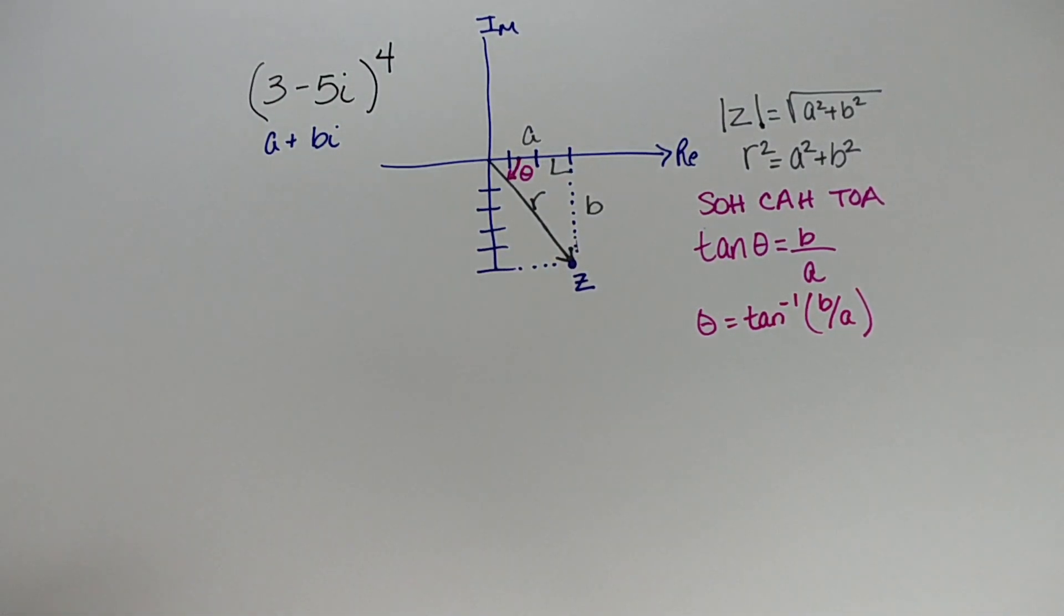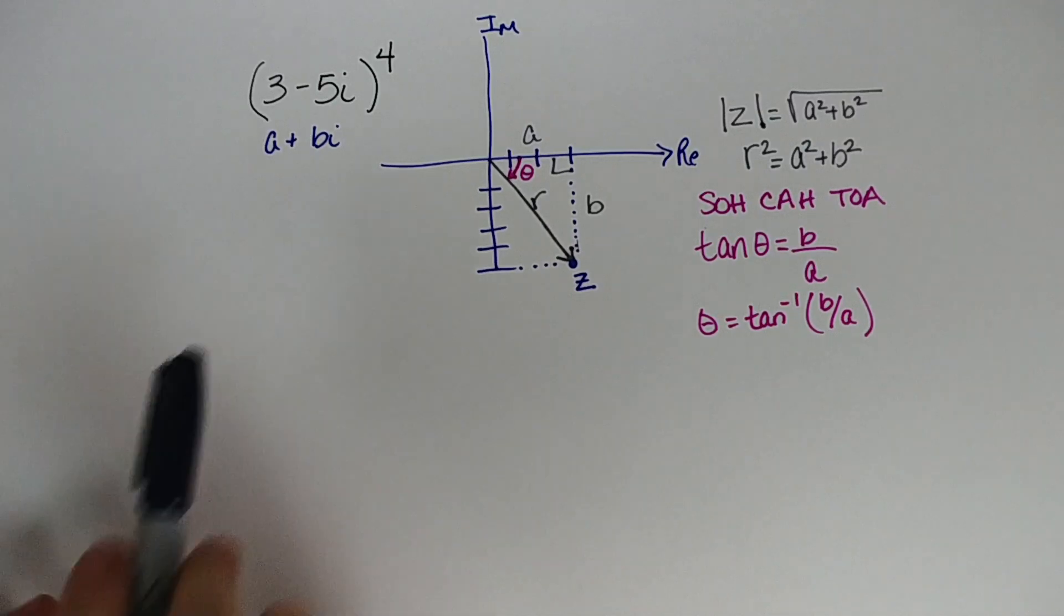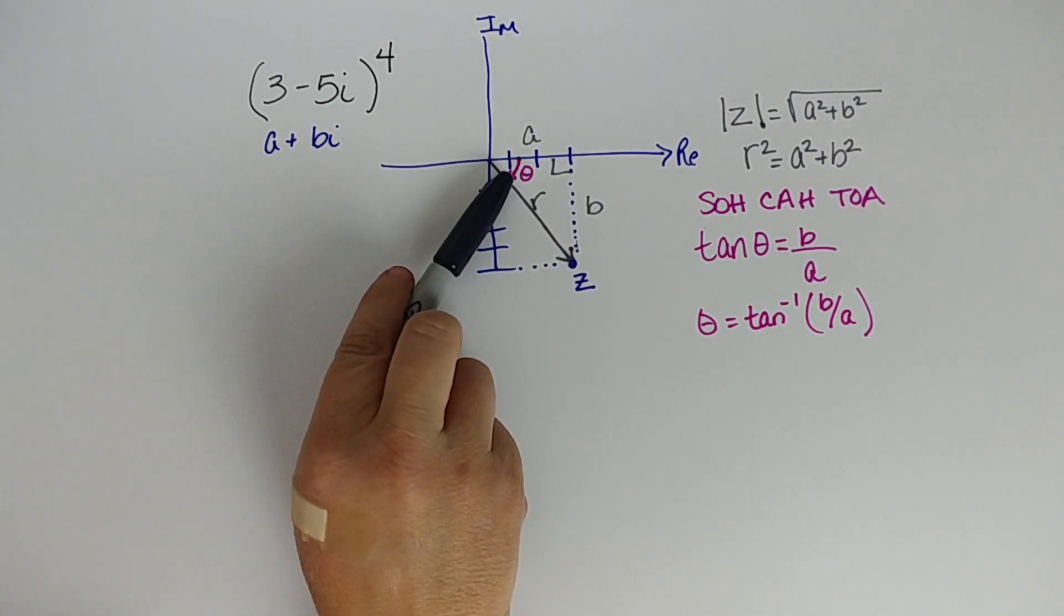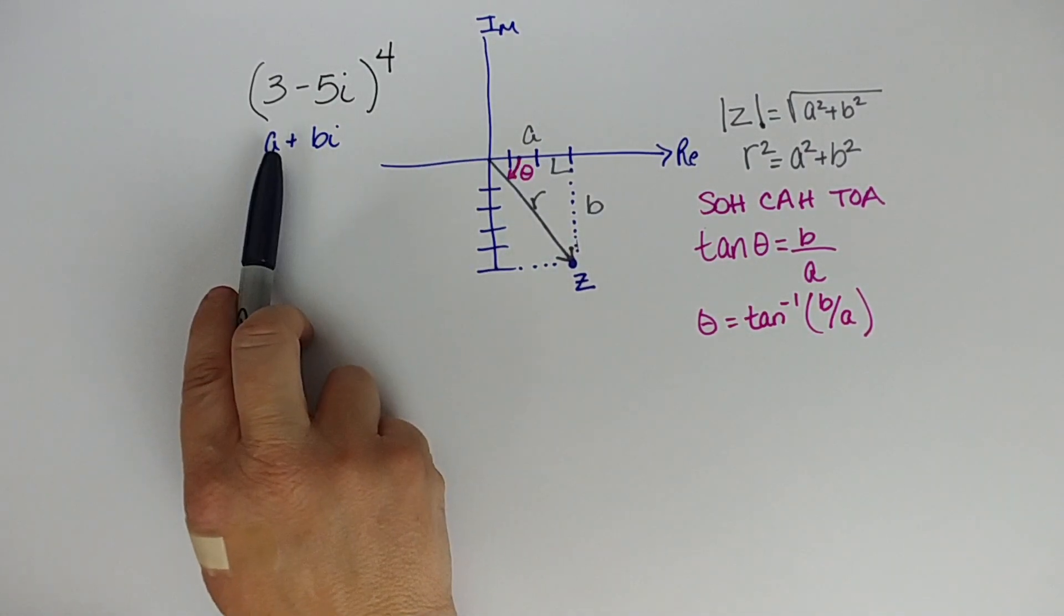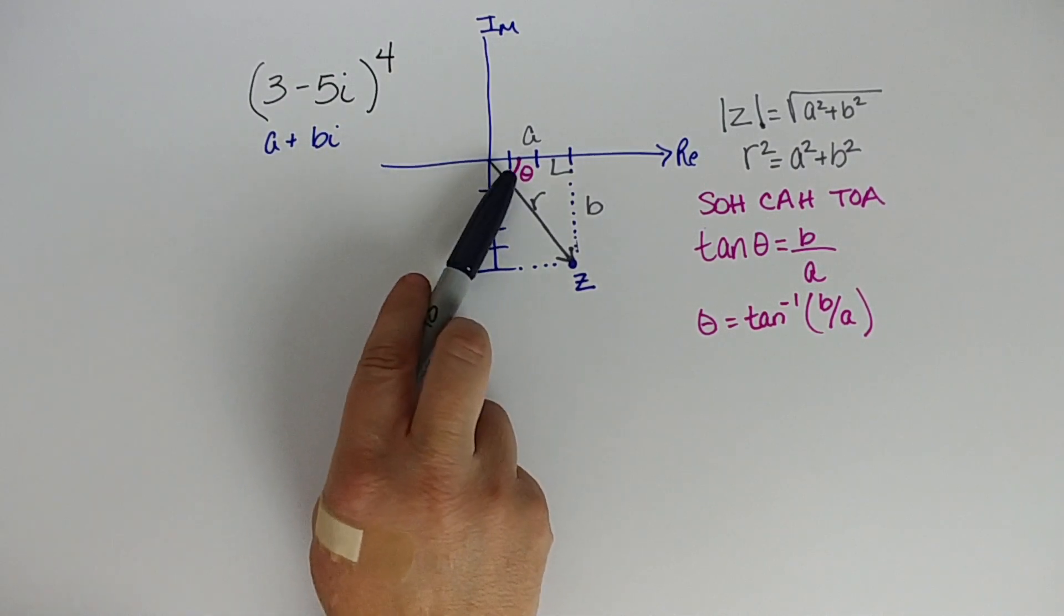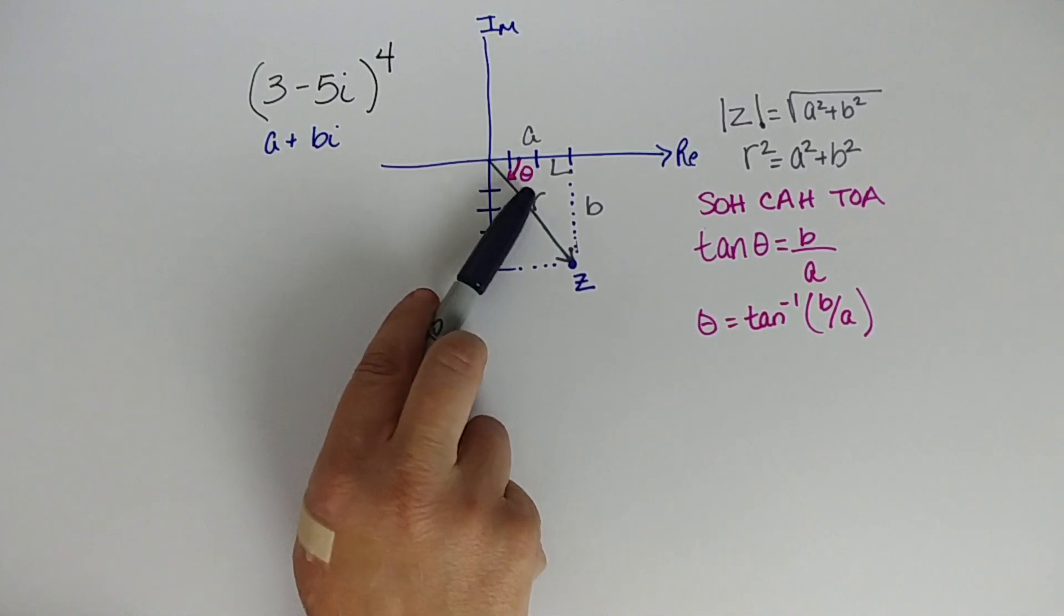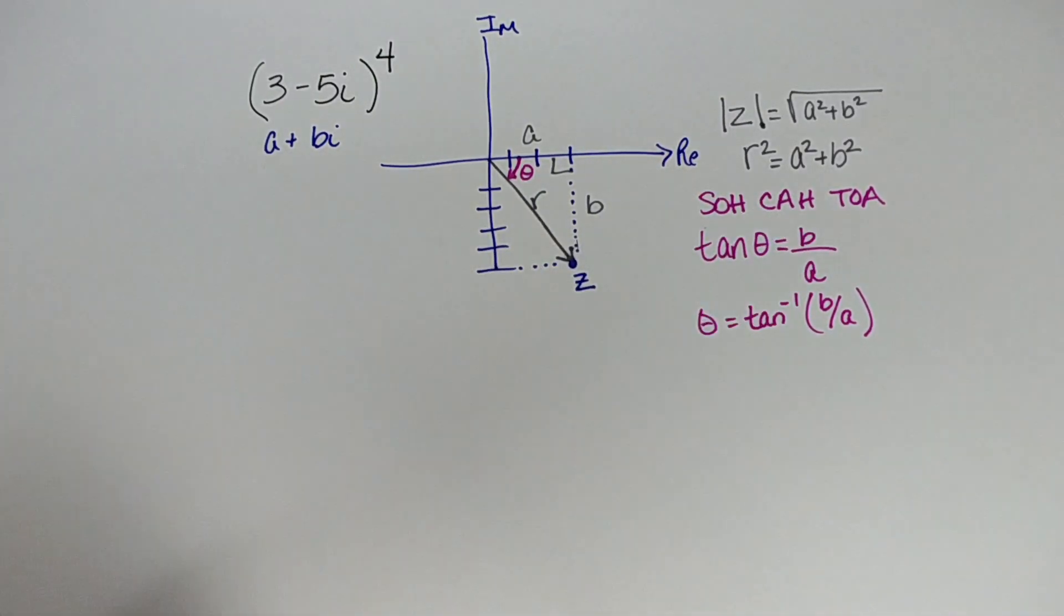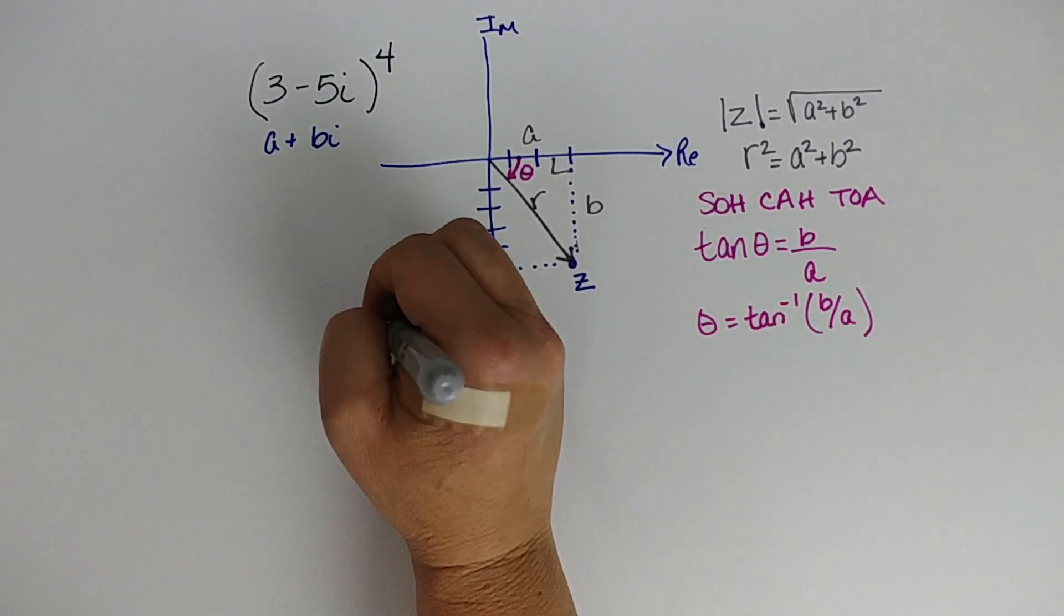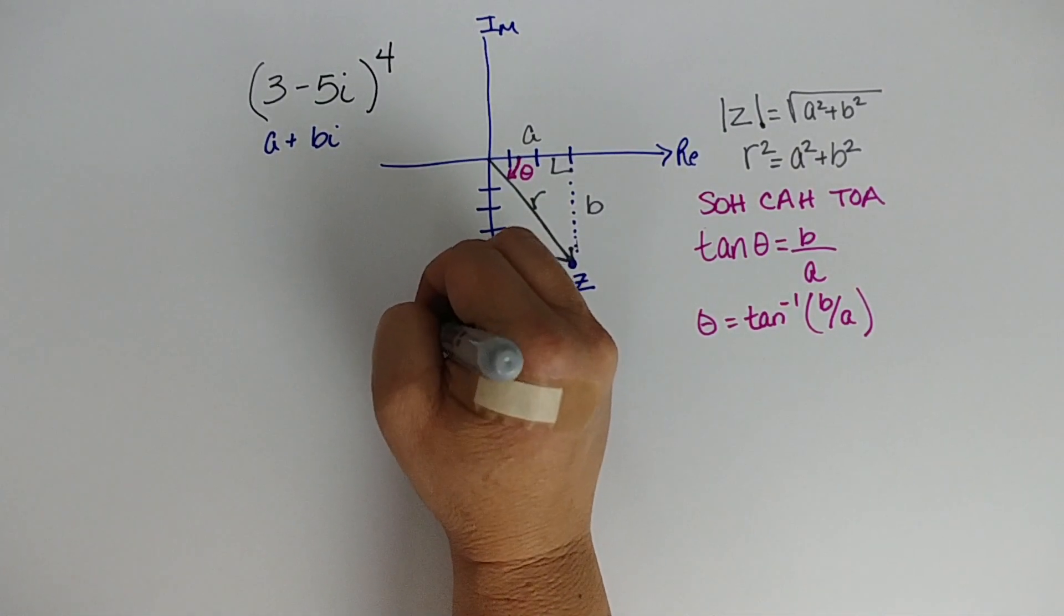Now we want to manipulate a and b. We want to talk about what a and b mean in terms of cosine, sine, and tangent. Let's look at this. If you look at our angle, let's do a first because a comes first here in our a plus bi form. So let's look at a. a is adjacent.